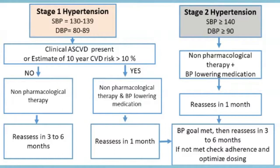In Stage 2 hypertension, management is quite simple: it requires drug therapy, that is BP-lowering medications, along with non-pharmacological therapy — lifestyle and diet modifications. For Stage 1 hypertension on the left side, you do not directly start treatment.